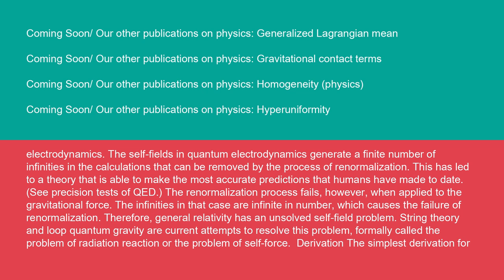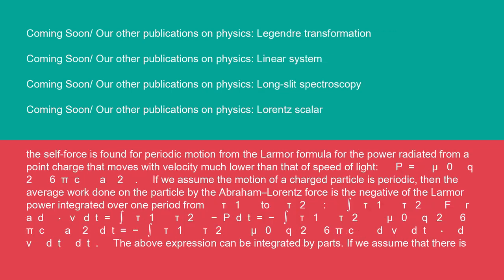Derivation: the simplest derivation for the self-force is found for periodic motion from the Larmor formula for the power radiated from a point charge that moves with velocity much lower than that of speed of light. P = (μ₀q²)/(6πc)A². If we assume the motion of a charged particle is periodic, then the average work done on the particle by the Abraham-Lorentz force is the negative of the Larmor power integrated over one period from τ₁ to τ₂.